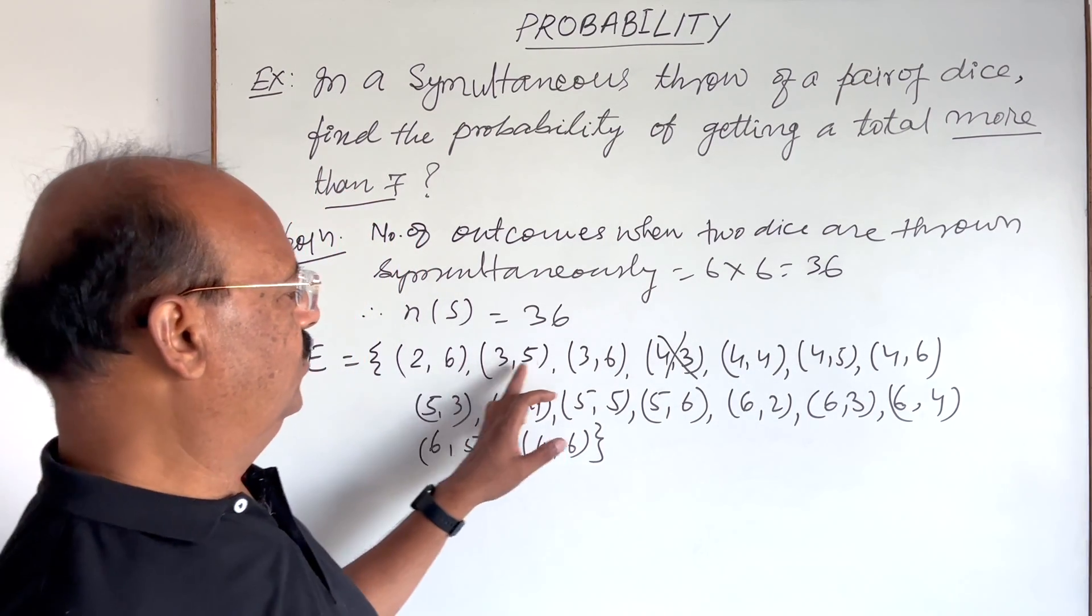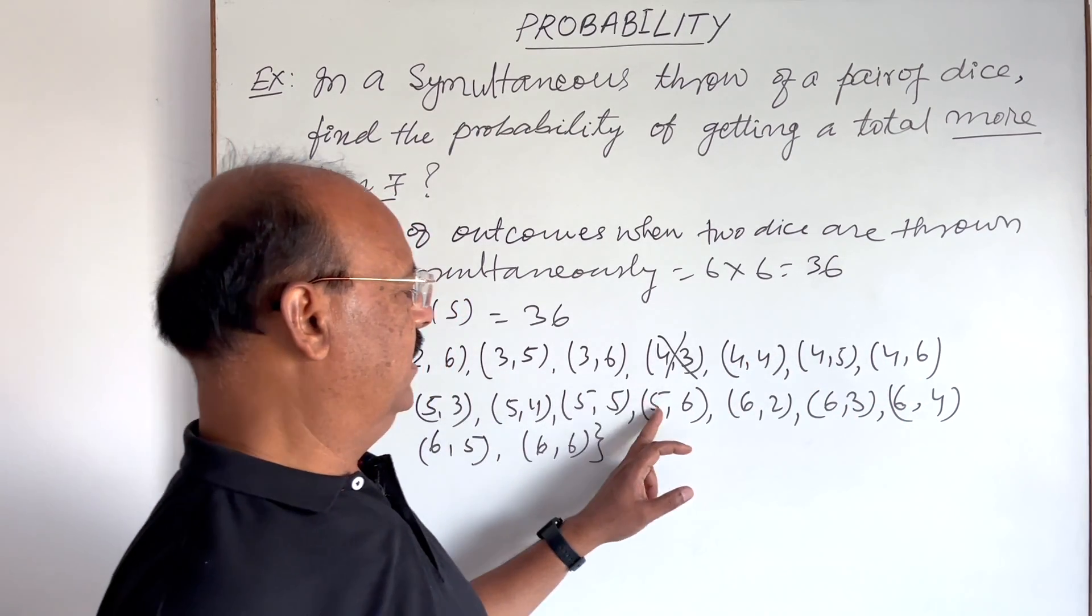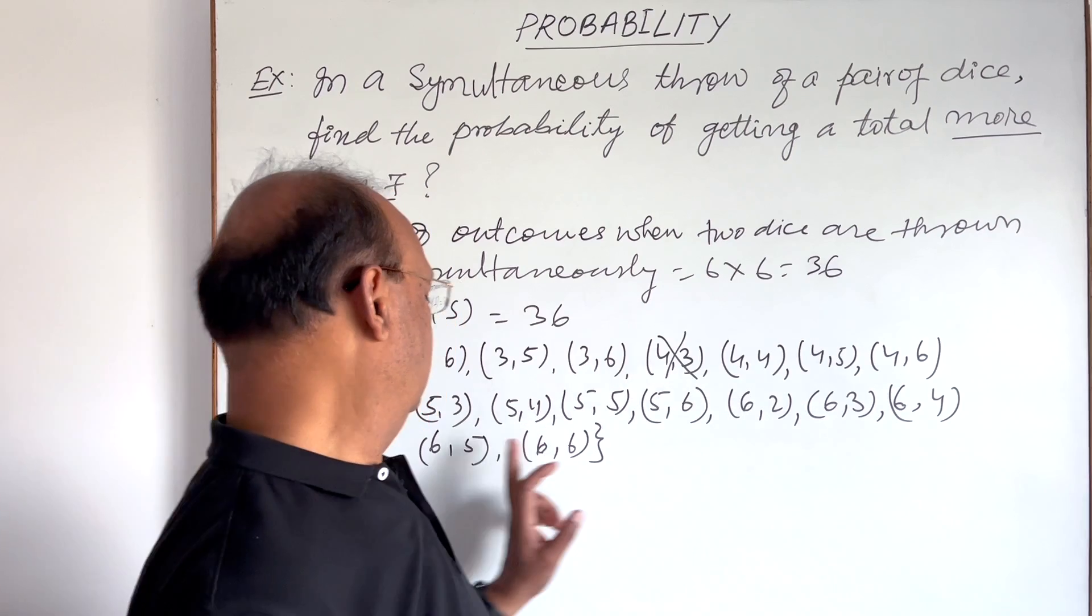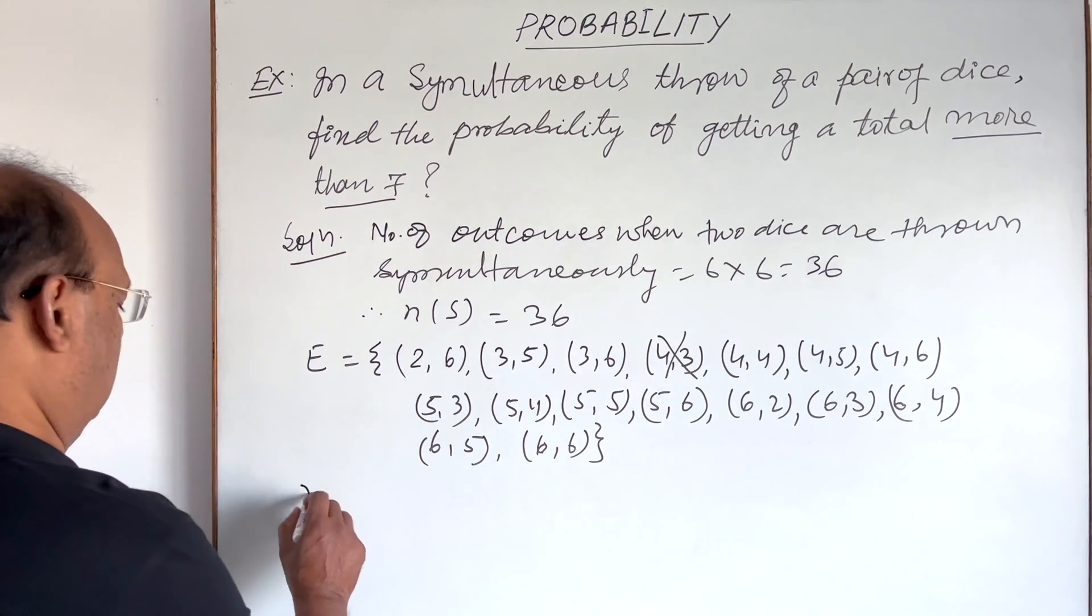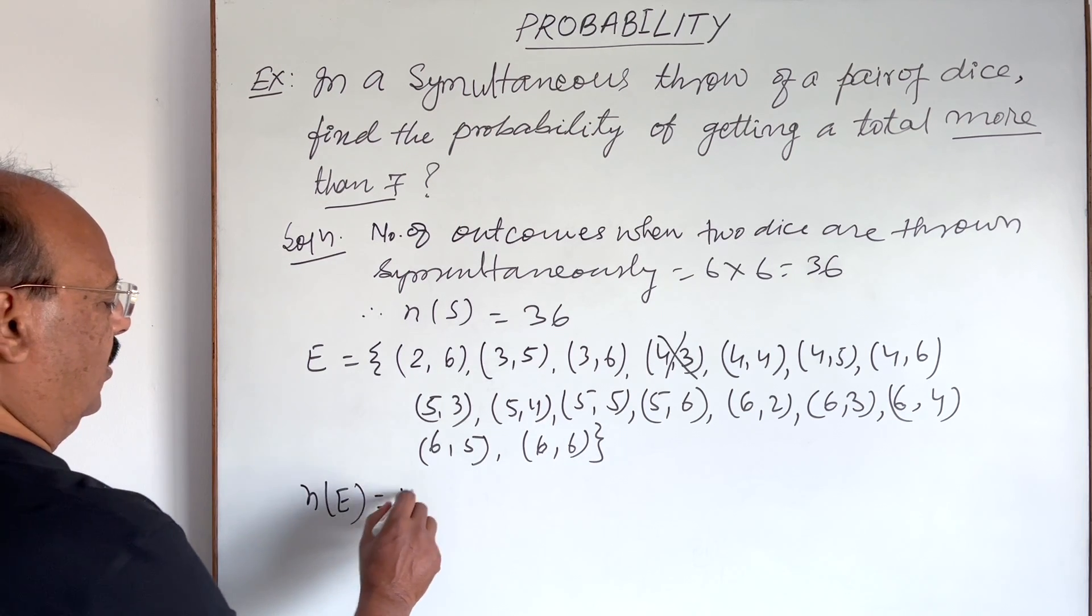Now let us count it. One, two, three, four, five, six, seven, eight, nine, ten, eleven, twelve, thirteen, fourteen, fifteen. So therefore, number of elements in event E will be 15. Here we have to find out probability of this event, probability of outcomes more than seven.